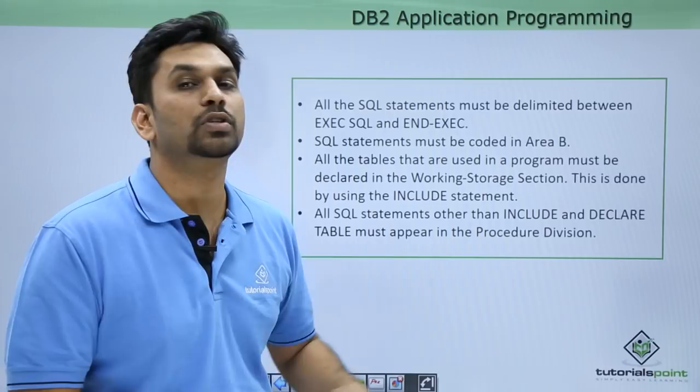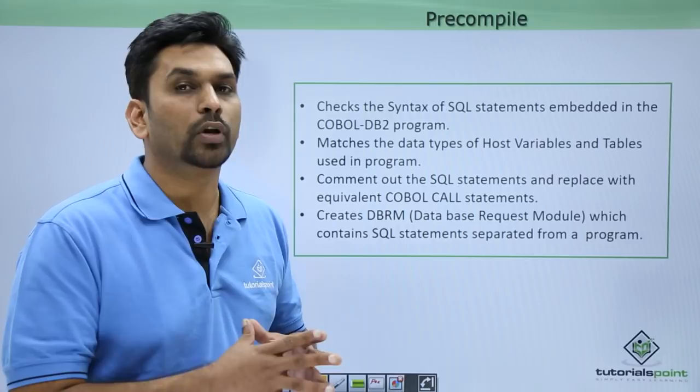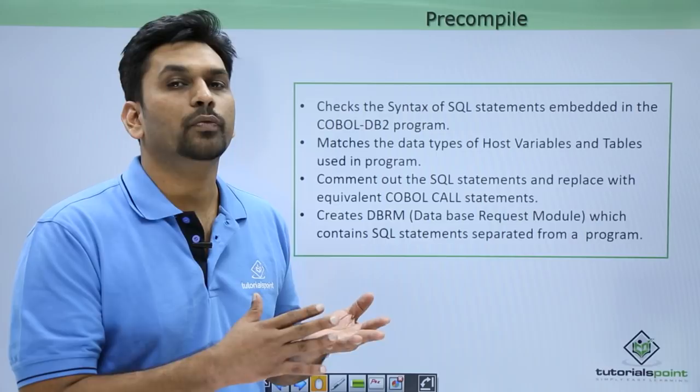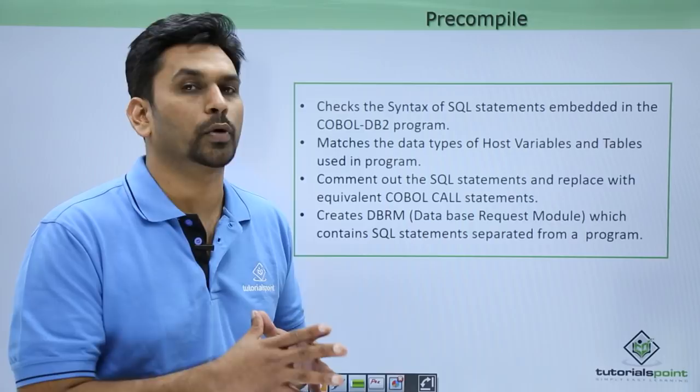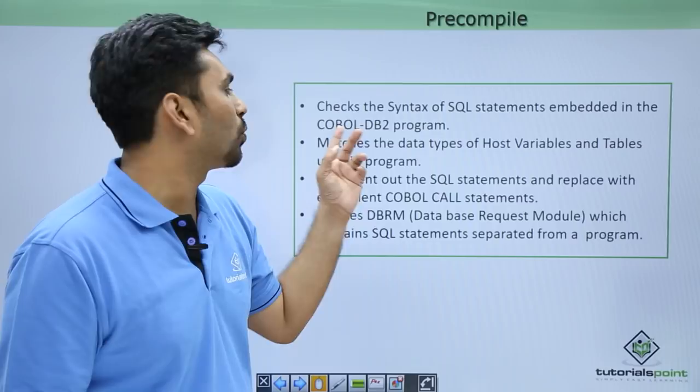Once you are done with the coding, you need to pre-compile it. This is done through JCL. After pre-compiling, we bind it; after binding, we compile and link edit it; then we execute it. In the pre-compile step, it checks the syntax of SQL statements embedded in the COBOL DB2 program.